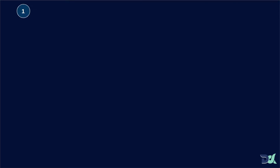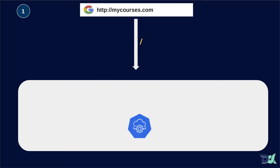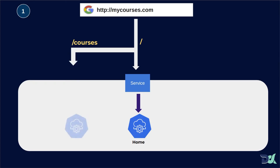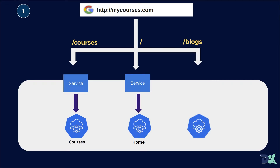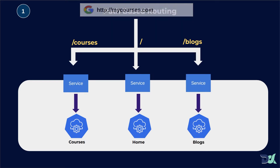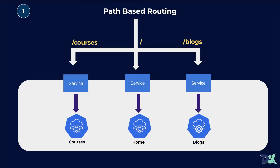Case number one: for mycourses.com we deploy our homepage as a deployment and create a service. Similarly, if we have mycourses.com/courses, we deploy the courses page as a deployment and create the service targeting that URL. Same for blogs — the deployment, the respective service, will target /blogs. This is what we call path-based routing — different paths route to their respective services and deployments.